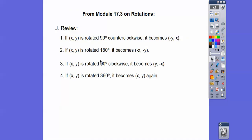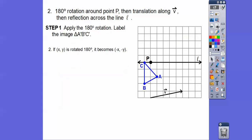For a 180-degree rotation, we take the (x, y) coordinate and negate both x and y — the opposite of x and the opposite of y. So for B, instead of going left 1, down 3, we go right 1, up 3. For A, instead of going right 1, down 2, we go left 1, up 2. That gives us our A'B'C'.